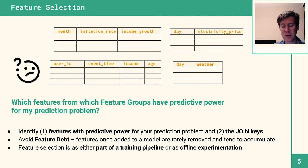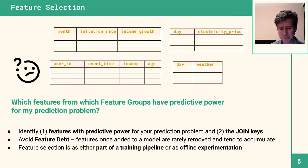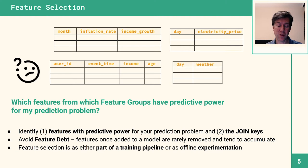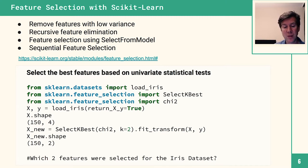Feature selection can be done either during offline experimentation — selecting features, creating training data, training a model, and evaluating performance — or as a specific step in a training pipeline. In a pipeline you can select features from different feature groups, join them together, and apply techniques to remove features that won't contribute to model performance.